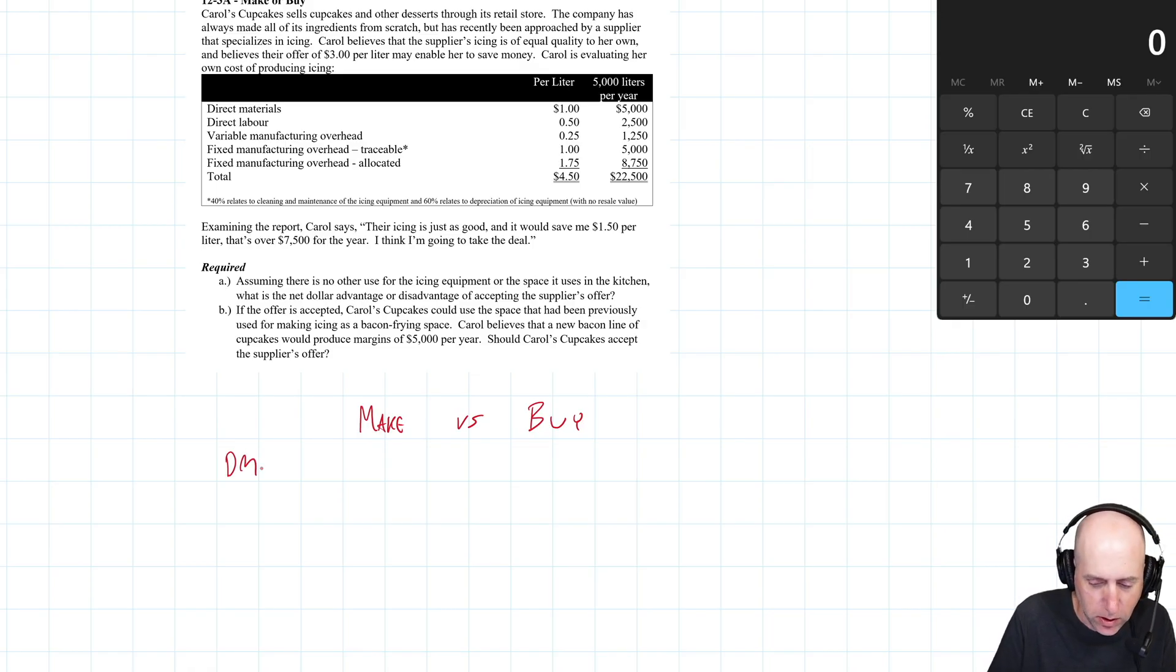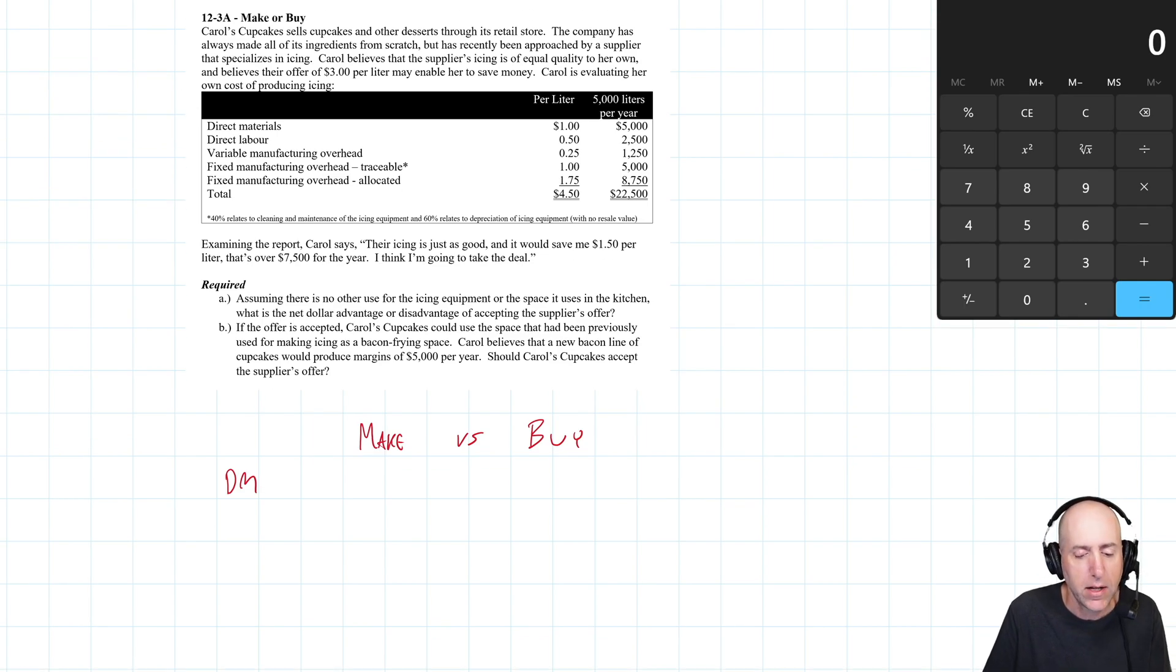So materials cost, I think is relevant, right? If she buys, she's not going to buy the sugar and whatever else goes in icing. She's not going to buy the supplies to make her own icing. So this dollar of materials just goes away. It's a dollar under make, it's $0 under buy. Direct labor. Well, there's no labor cost if you're buying, right? You're just bringing the stuff in. If you're making, it costs you 50 cents per unit per liter.